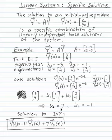But basically, 7 copies of the second vector minus 11 copies of the first vector. You can multiply those combinations and you'd see you get 3 and 4. So the solution to this initial value problem is y(t) = -11y₁(t) + 7y₂(t).